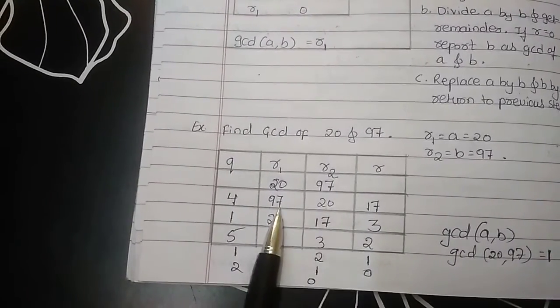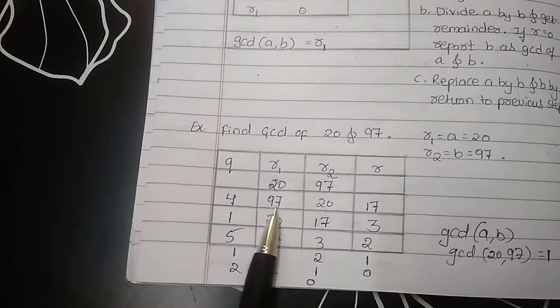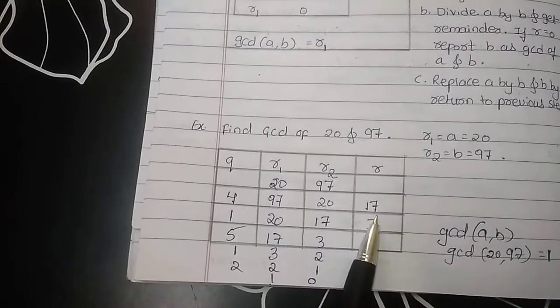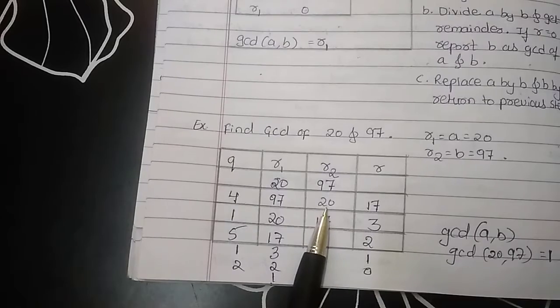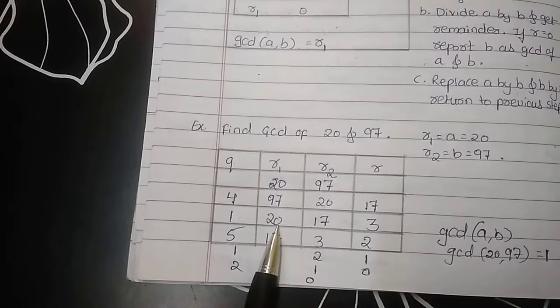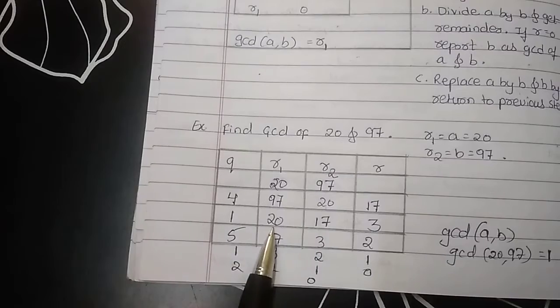After that, divide this 97 by 20. 20 fours, 80 and remainder is 17. After that, the value of R2 is shifted here and value of R is shifted to R2.